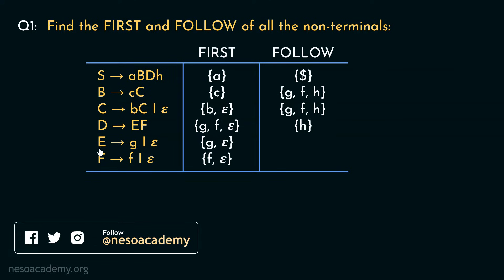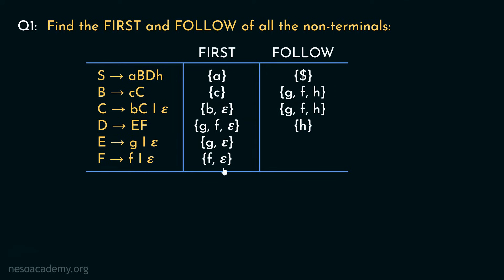Let's now find out Follow of E. E appears in this particular production rule, so to obtain Follow of E we require First of F. First of F has the symbols f and epsilon, so in Follow of E we include the symbol f. Since First of F also includes epsilon, if we substitute epsilon for F, then E becomes the rightmost non-terminal on the right-hand side, so we need Follow of D — which has the symbol h. Therefore, Follow of E includes both f and h.